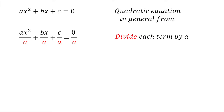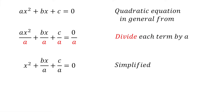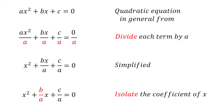This gives us: ax squared divided by a, plus bx divided by a, plus c divided by a, equals 0. We now isolate the coefficient of the x term to make it more plain to see, giving us x squared plus (b divided by a)x plus c divided by a equals 0.